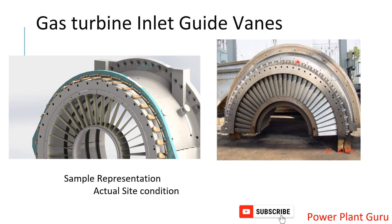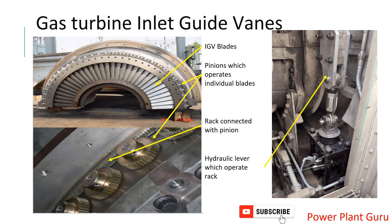This image we saw in the last slide. Now this is the actual image of how a gas turbine IGV looks. The left one is a graphical representation while the right one shows how it actually looks. The blades are shown in a closed condition here and in an open condition there. These small pinions are visible here.